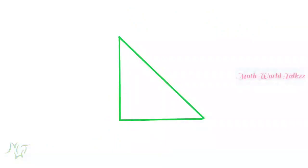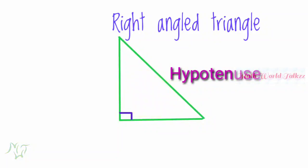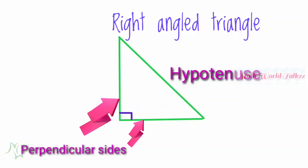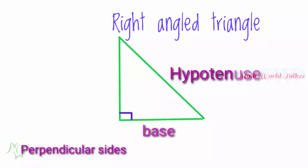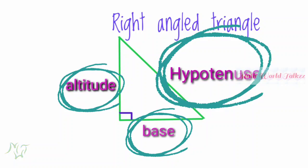If one angle of a triangle is 90 degrees, then it is a right angle triangle. The side opposite to the right angle is called the hypotenuse, and the sides having the right angle are known as the perpendicular sides of that triangle. The perpendicular sides are also known as altitude and base.